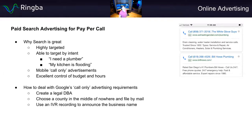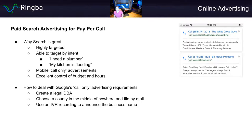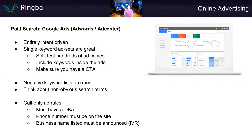Google also requires that you disclose to the customer on the phone who you are. You can use an IVR inside Ringba with text-to-speech or a recording that announces the business name — something like 'Thank you for calling Bill Howe Plumbing, we'll connect you with an agent, please hold.' If Google calls the phone number, they'll see the business name in the ad matches the disclosure on the phone, confirming you're following the rules, and your account will not get banned.